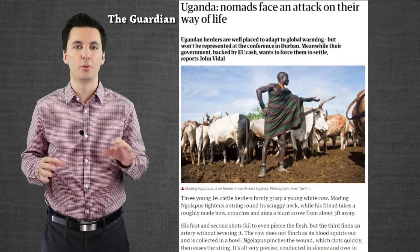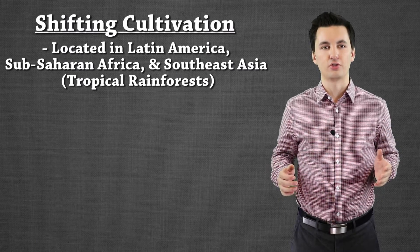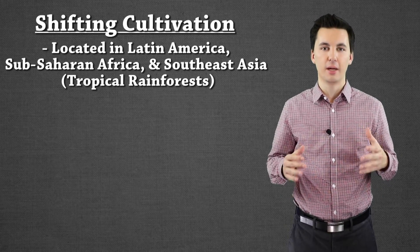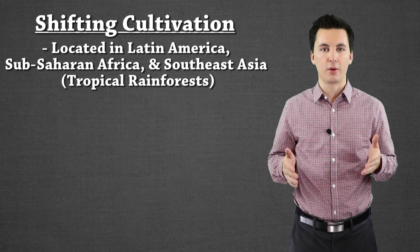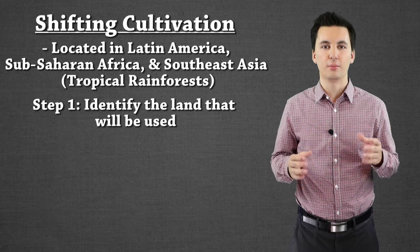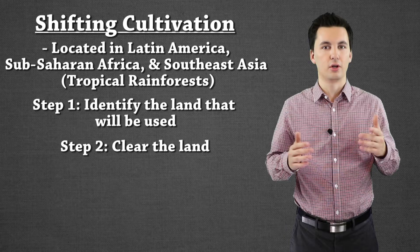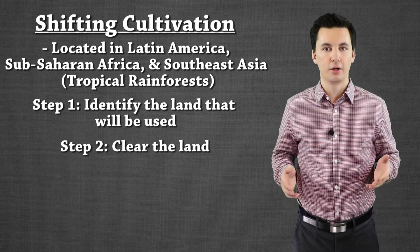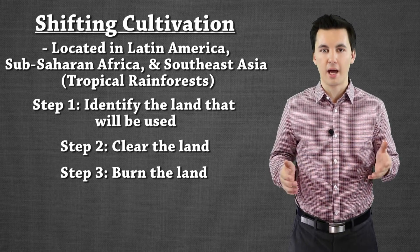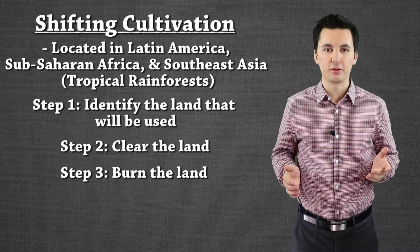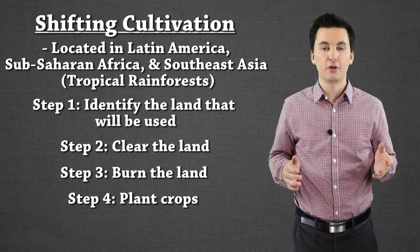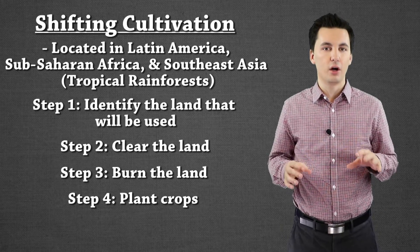Our next type of agriculture is shifting cultivation, better known as slash and burn. What happens here is we'll have a main village, and the village is going to decide where they want to plant their crops. These are located in tropical areas. When they identify a plot of land, they're going to clear it — cut down all the trees, let it fall, and then they're going to burn everything in the area that they plan on planting. This will put nutrients back into the soil. Once everything is burned and cleared, they will plant their crops for as long as they can, normally around three years, sometimes even less.